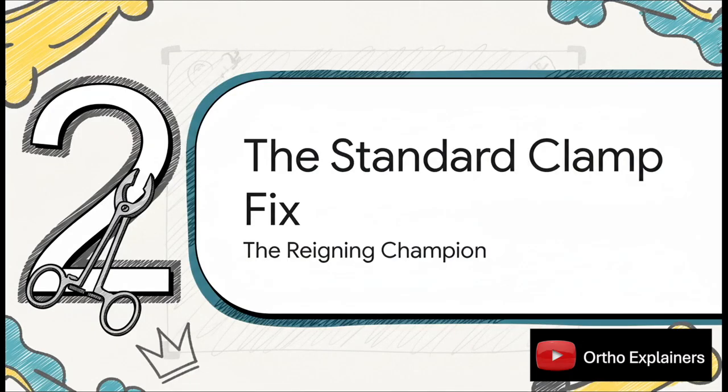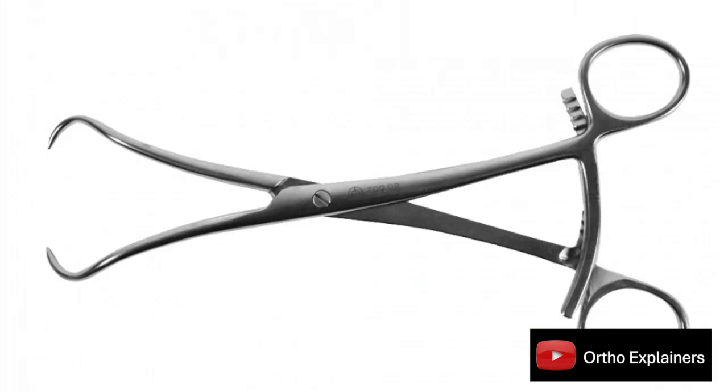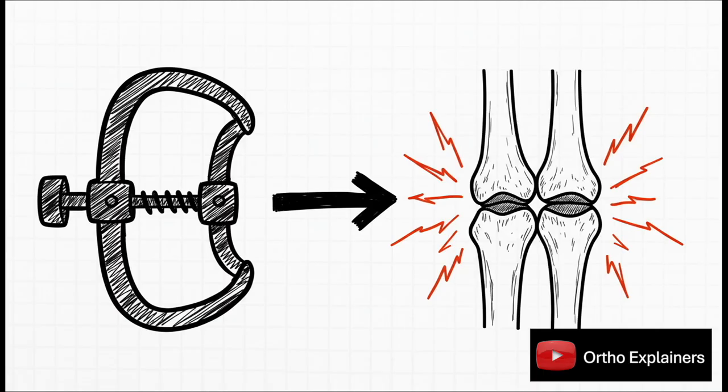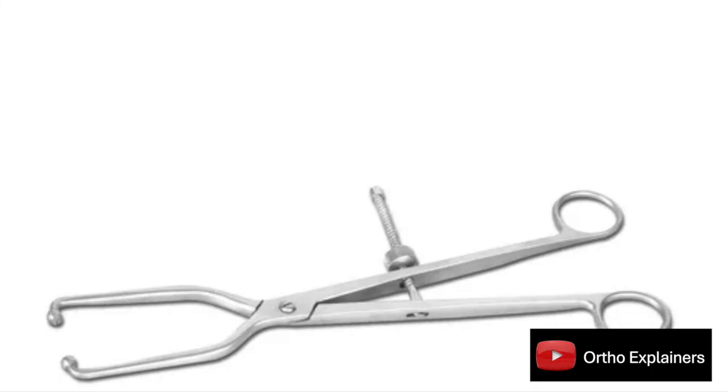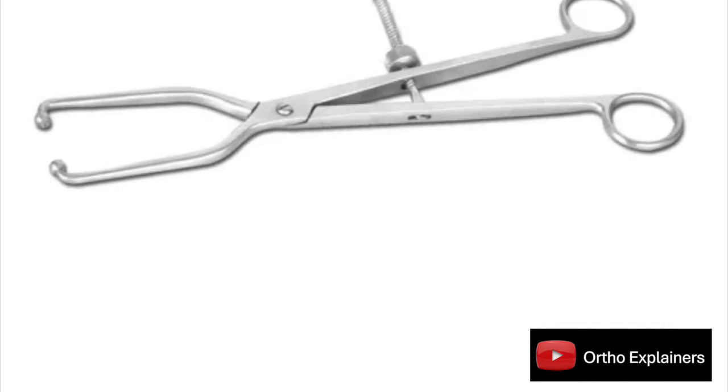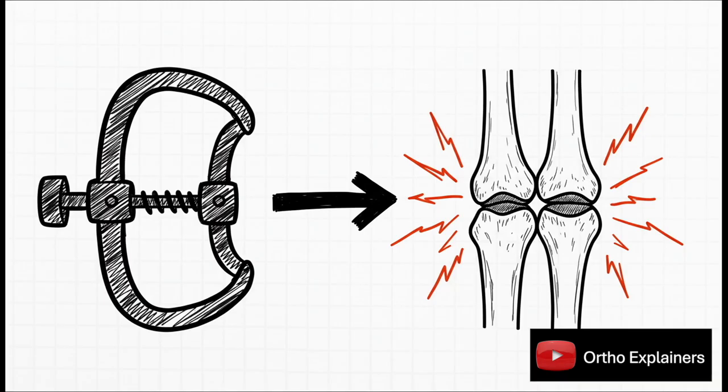So how do surgeons usually handle this? Well, let's meet our reigning champion, the go-to method used in operating rooms all over the world, the reduction clamp. The idea behind the clamp is pretty straightforward. A surgeon uses this big, powerful tool with these pointed tips to literally squeeze the tibia and fibula back into their perfect anatomical position. For a long time, it's been thought of as the most precise, most stable way to get the job done. But it's not perfect. It's another big tool you have to have on the tray, and there's always this little risk of squeezing too hard, something surgeons call over-compression.